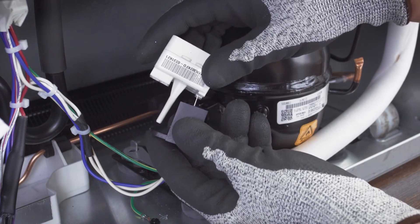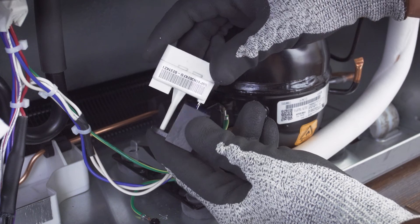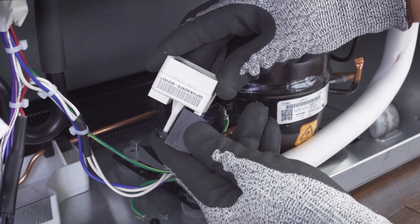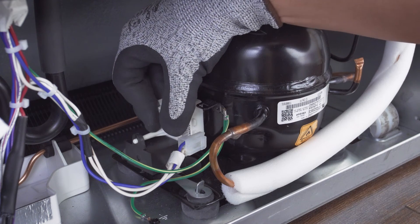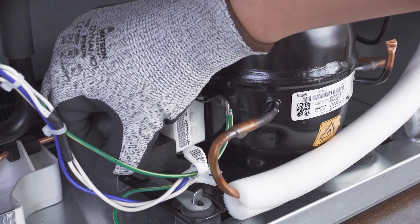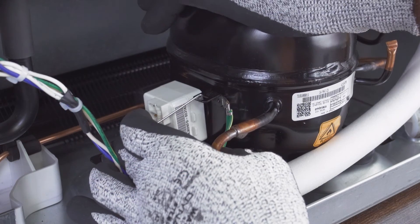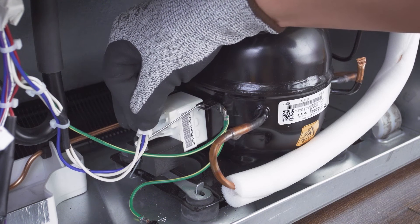If your capacitor attaches to the combination relay then align the mounting pin and push it into place. Next align the relay and attach it to the compressor. Now attach the retaining clip. Finally reconnect the wires.